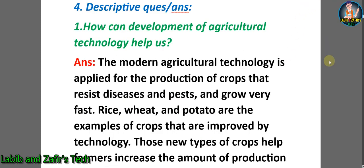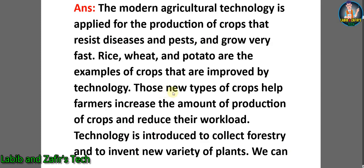Now let's go through some descriptive question answers. Number one: how can development of agricultural technology help us? Answer: modern agricultural technology is applied for the production of crops that resist diseases and pests and grow very fast. Rice, wheat, and potatoes are examples of crops that are improved by technology. These new types of crops help farmers increase the amount of crop production and reduce their workload.